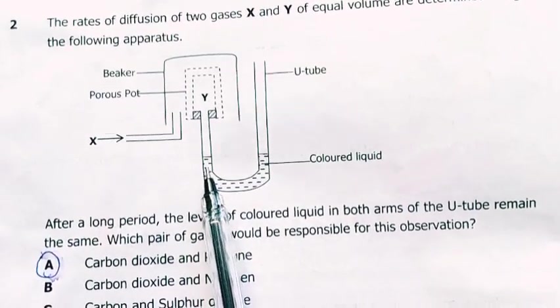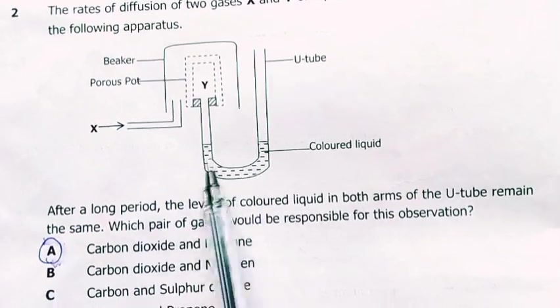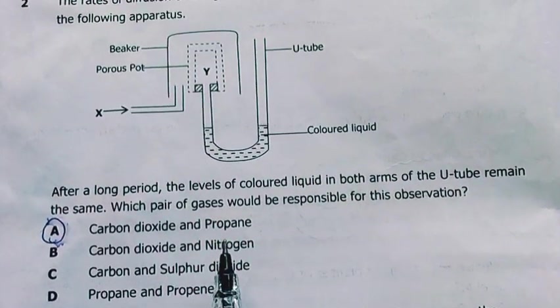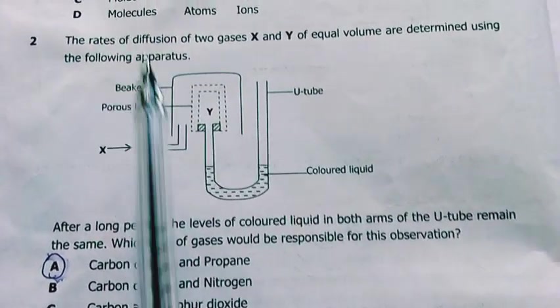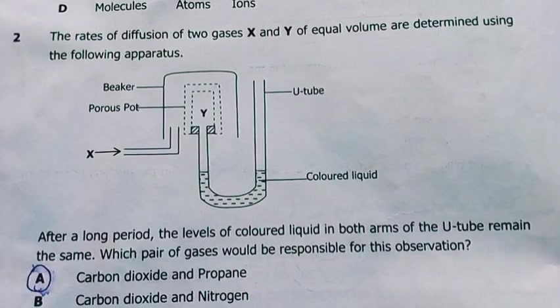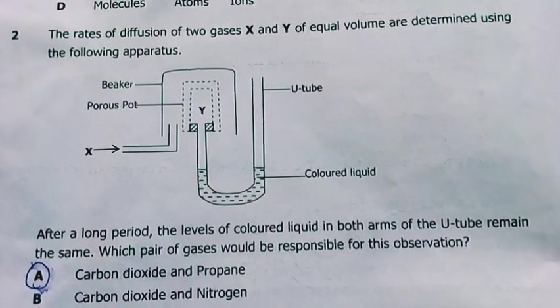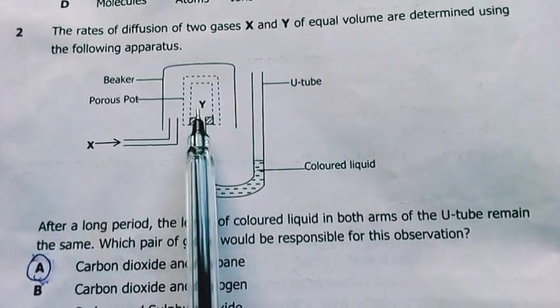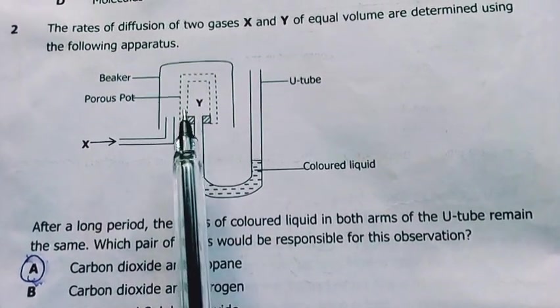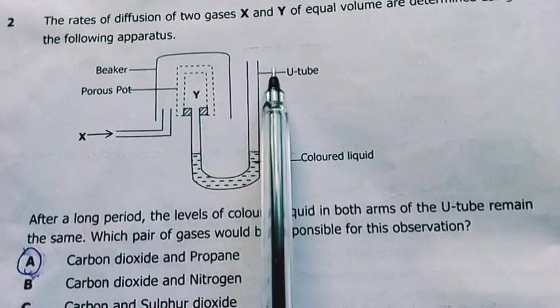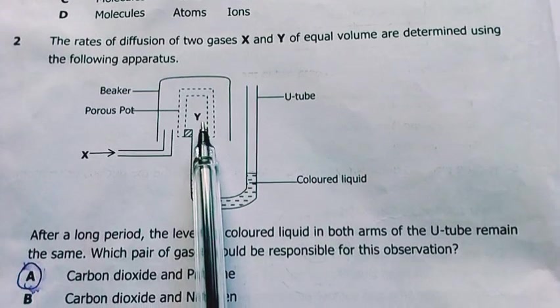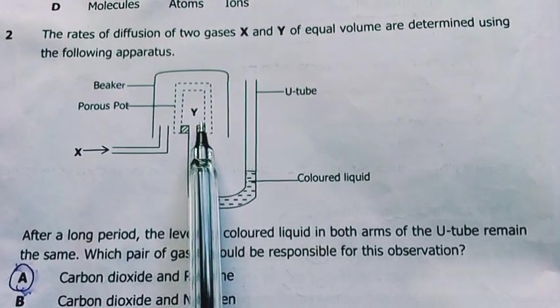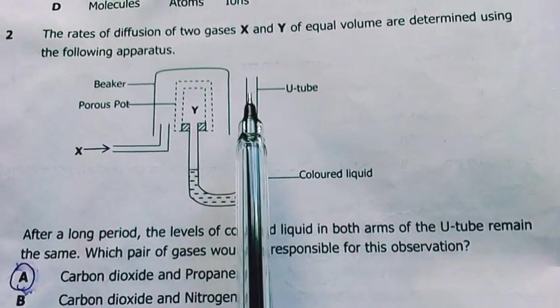The water doesn't rise on either side, so the levels, meaning pressure coming down and pressure here, is the same. My take was carbon dioxide and propane. If these gases are diffusing at the same rate, it means there won't be any difference in pressure inside here because the pressure here is coming from the atmosphere. The pressure won't increase because of X going in, and it won't reduce extremely because of Y escaping at a faster rate.